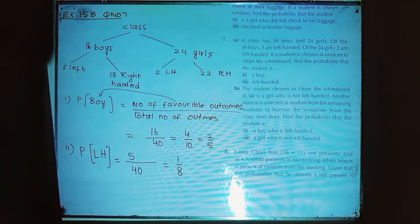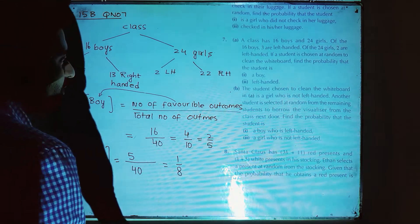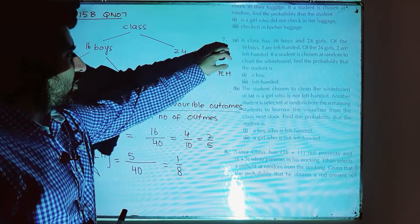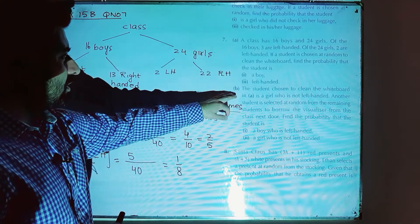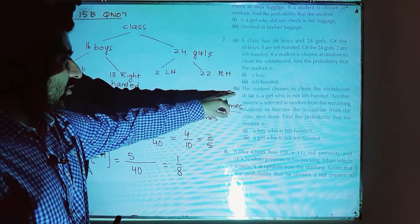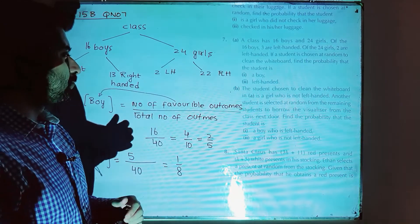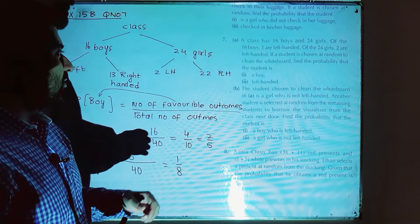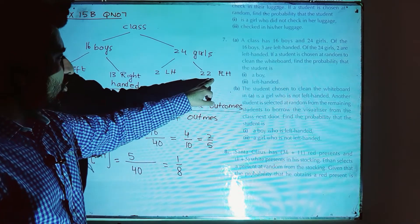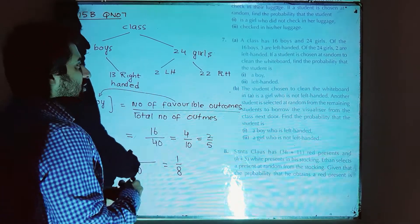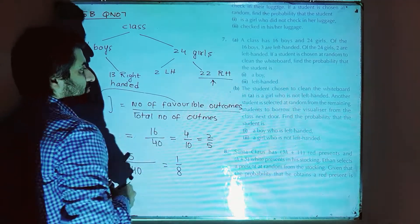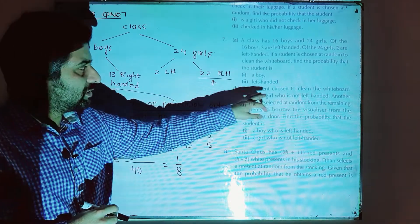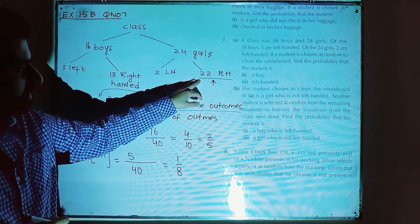Part 2: the student chosen to clean the whiteboard is a girl who is not left-handed. We are talking about a girl who is not left-handed, so we have 22 girls that are not left-handed. Now, another student is selected at random from the remaining students.